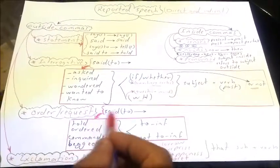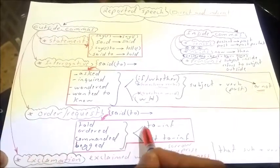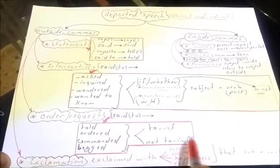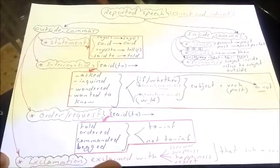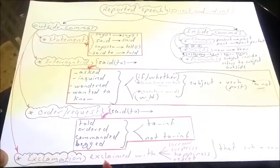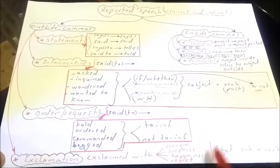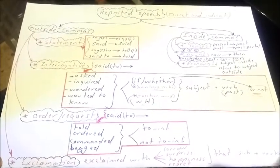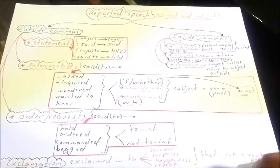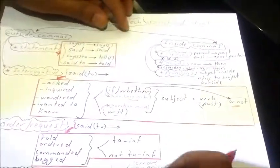The third kind is order, request, or command: 'said' or 'said to' becomes 'told', 'ordered', 'commanded', or 'picked', followed by 'to' plus infinitive, or 'not to' plus infinitive. For exclamation, 'said' or 'said to' becomes 'exclaimed with sorrow/surprise/happiness/regret', followed by 'that' plus subject plus verb in the past tense. These are the changes outside commas.